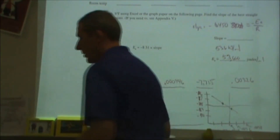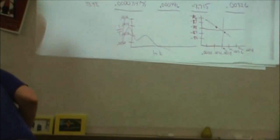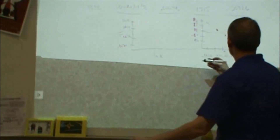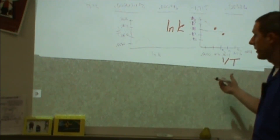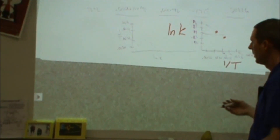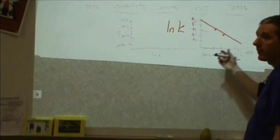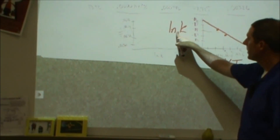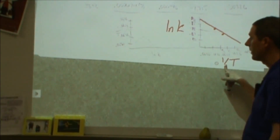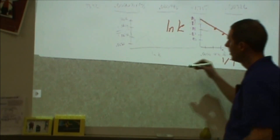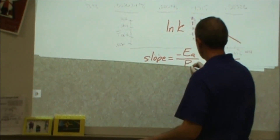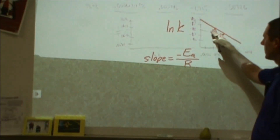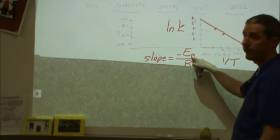I then constructed a graph plotting ln(k) on the y-axis and 1/T (in Kelvin) on the x-axis, giving two data points. I drew a line through them and calculated the slope as the difference in ln(k) values divided by the difference in 1/T values. From the Arrhenius equation, that slope equals −Ea/R, so multiplying the slope by negative R gives the activation energy.